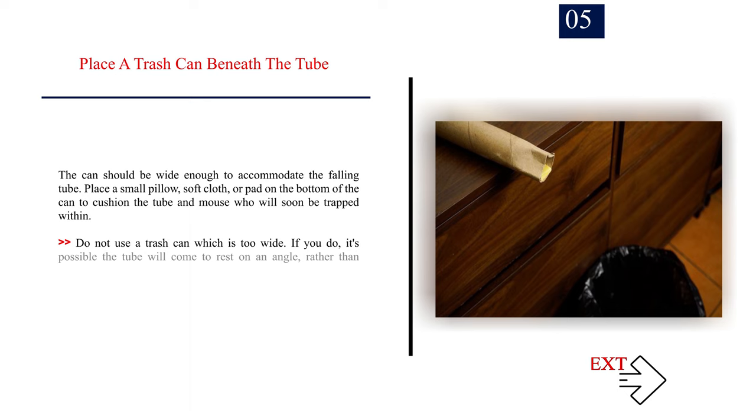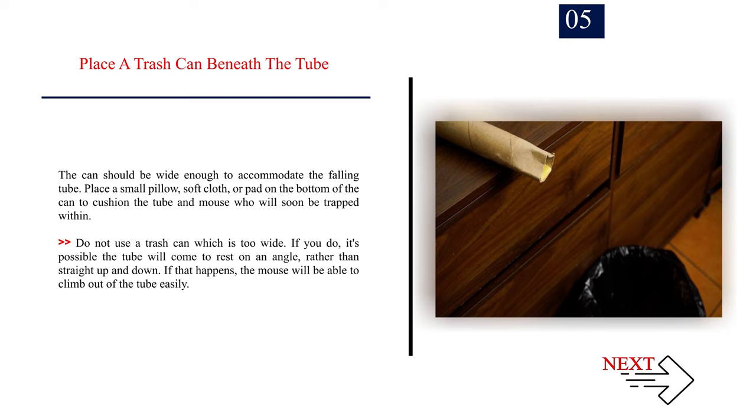Number 5: Place a trash can beneath the tube. The can should be wide enough to accommodate the falling tube. Place a small pillow, soft cloth, or pad on the bottom of the can to cushion the tube and mouse who will soon be trapped within. Do not use a trash can which is too wide. If you do, it's possible the tube will come to rest on an angle, rather than straight up and down. If that happens, the mouse will be able to climb out of the tube easily.